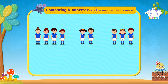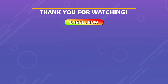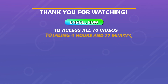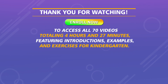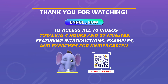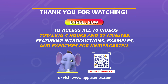How many children do we have here? One, two, three, four. Four. How many children do we have here? One, two, three, four. Four.